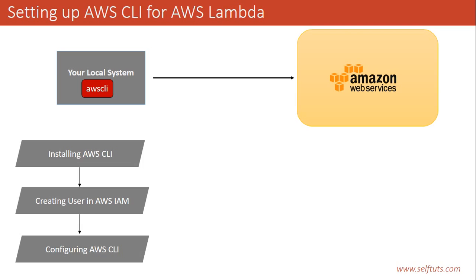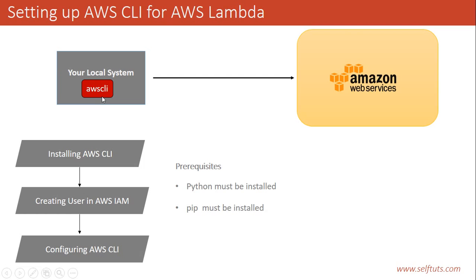First we'll try to install the AWS CLI. For installing AWS CLI, there are some prerequisites. The first one is Python must be installed on your system. If you are using a Linux system, Python comes by default. You can install 2.7.x or 3.4 — there is no hard rule that you have to install Python 3.x; Python 2.7.5 is also fine. Then pip must be installed. Pip is a package manager used by Python. When installing a package that has dependencies on other packages, pip downloads all those dependencies automatically, so you don't have to worry about them manually.